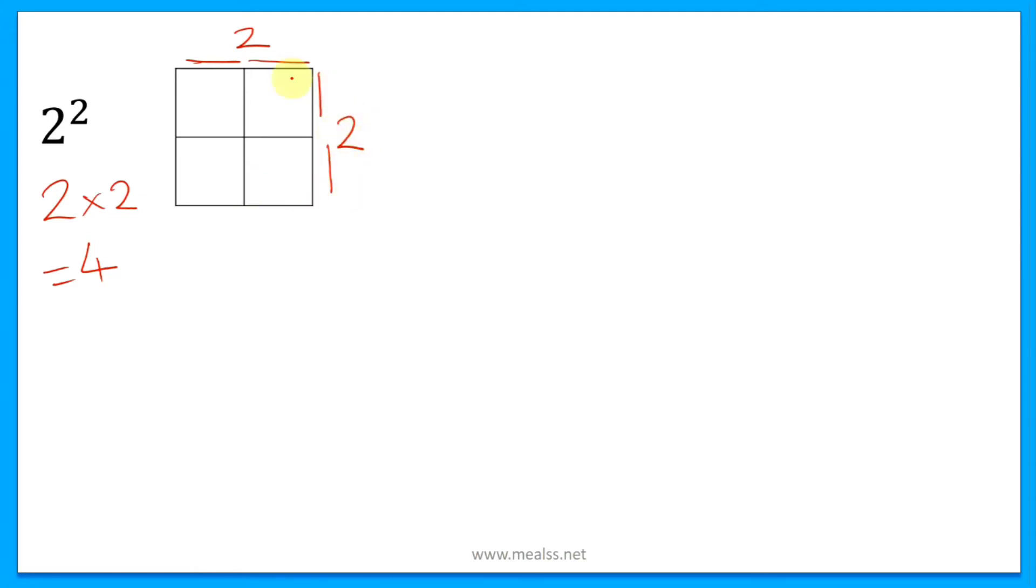Now if we find the area, which is kind of what we're doing here, 2 multiplied by 2, we find that there are four smaller squares inside. Here's one, two, three, and four, and these make a perfect square.